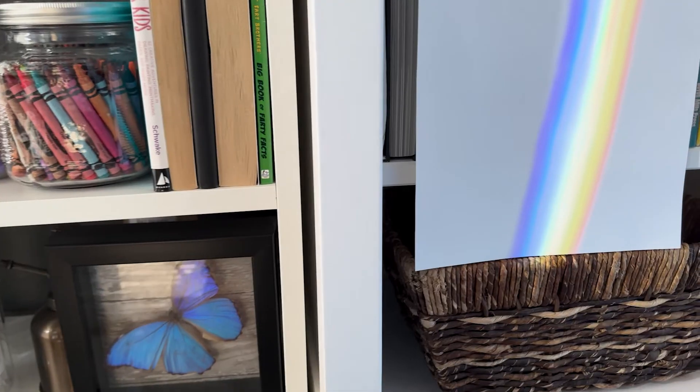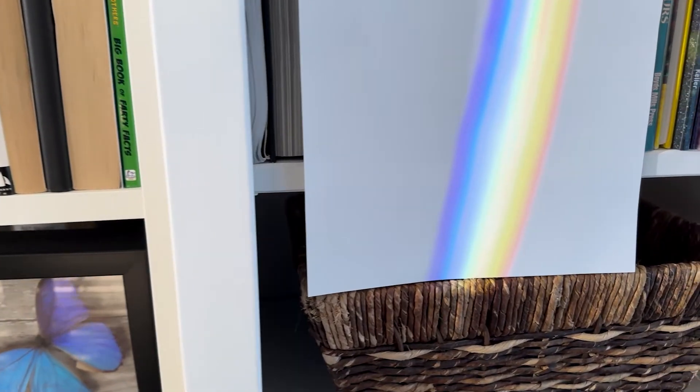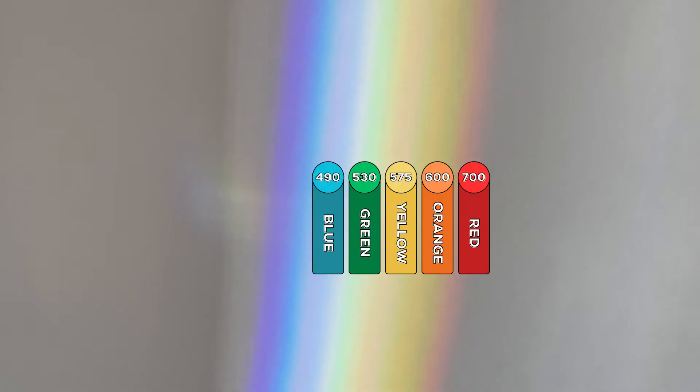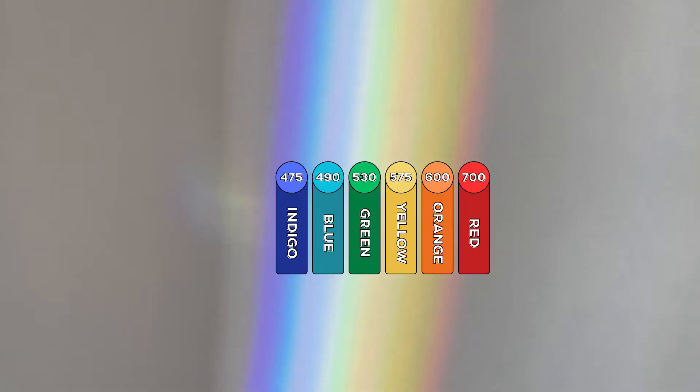The rainbow we perceive is actually visible light in order of its energy. At one side of the rainbow is low energy light we see as red, then orange, yellow, green, blue, indigo, and violet — the highest energy light we see.